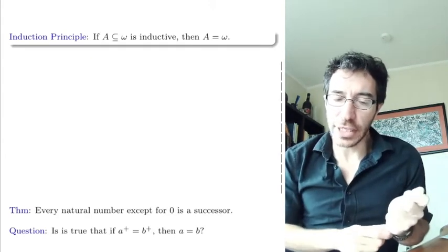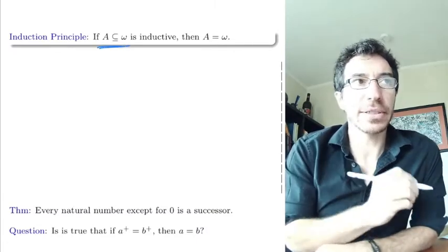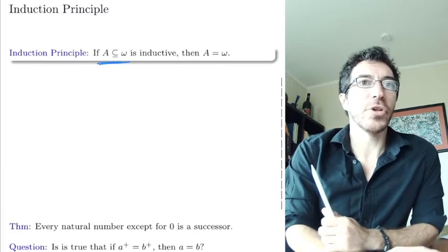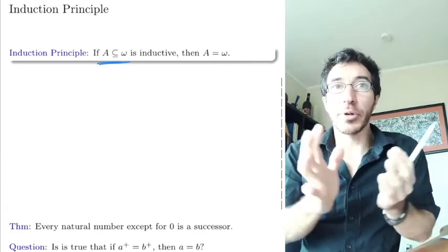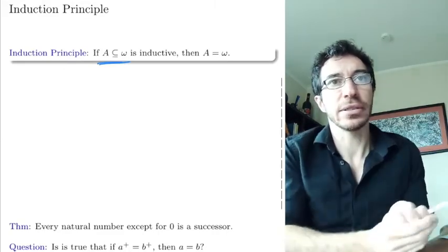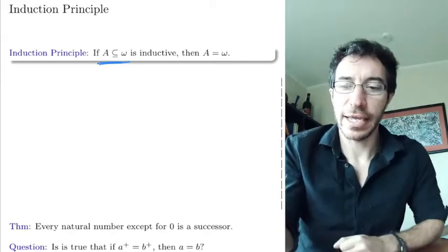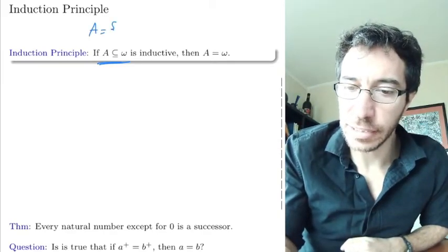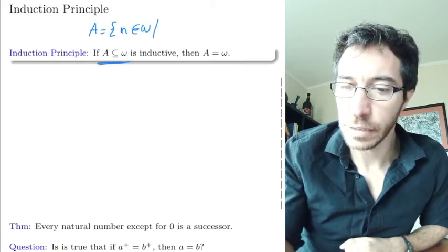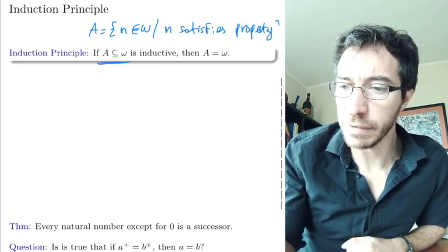So the induction principle — the way you're going to state it is: if you have a set A, a subset of the natural numbers, think of A as encoding a property. You have a property that you want to show about the natural numbers, and A is the set of all the things that satisfy this property. So you want to show that all natural numbers have a certain property. Let's write it down: A is the set of all n in omega such that n satisfies some given property.